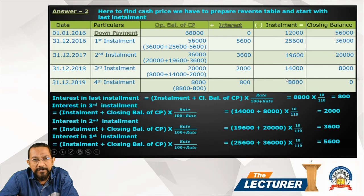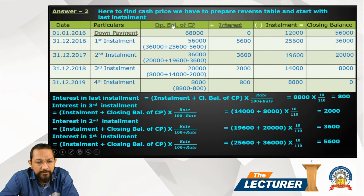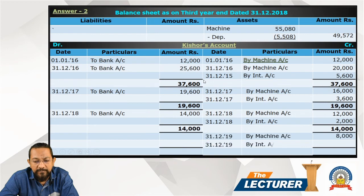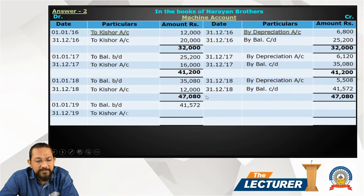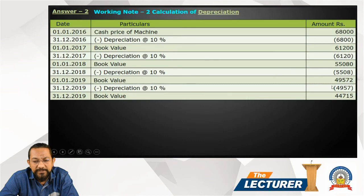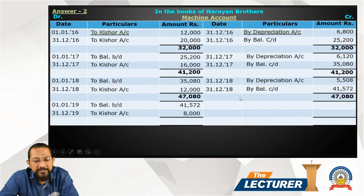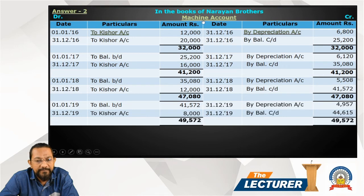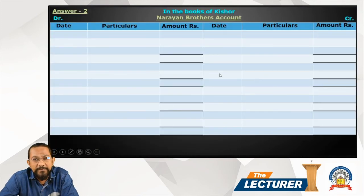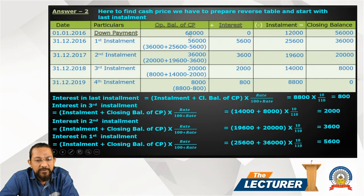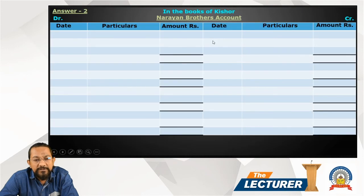Last installment: interest is 800, installment is 8,800, repayment of cash price is 8,000. Entry: Machinery Account debit 8,000, Interest Account debit 800, to Kisor Account 8,800. Payment: Kisor Account debit to Bank 8,800. Depreciation of 4,957 is charged. Machinery Account closed to balance. Total entries in Kisor Account add up to 68,000.